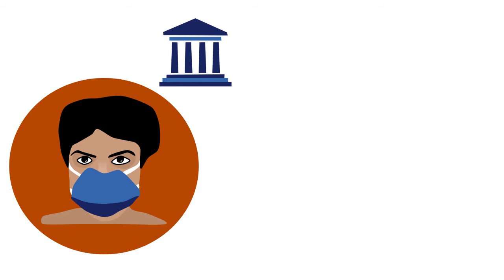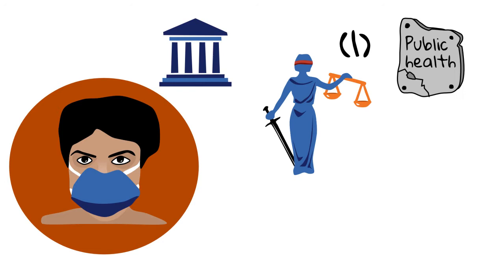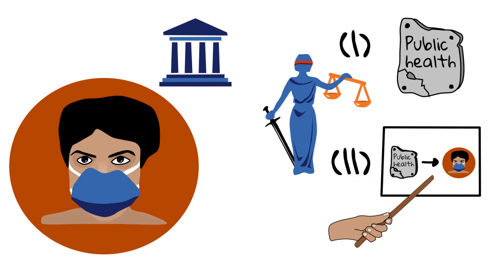Say a government wants to justify that they oblige everyone to wear face masks when using public transport. They will likely say they do it to protect public health. This is the normative basis, but it's not enough. They also need to explain why, in the given circumstances, wearing masks in public transport is a good measure to protect public health.